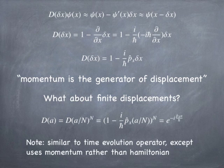Notice that this is looking a lot like the time evolution operator: e to the minus i times the Hamiltonian over h-bar times t. But now we're not displacing in time, we're displacing in space. So instead of a Hamiltonian, I need to use momentum.